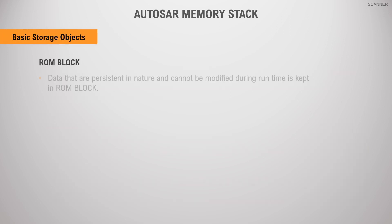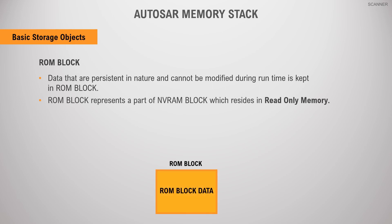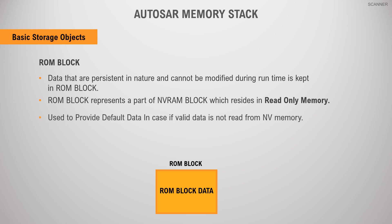Application software data that is persistent in nature and cannot be modified during program execution is kept in a ROM block. A ROM block represents a part of the non-volatile RAM block which resides in read-only memory. It is used to provide default data in cases where no valid data could be read from NV memory, either due to a CRC error or any other failure. For example, if the NV-RAM Manager cannot read a vehicle calibration dataset from non-volatile memory into RAM, it will copy the calibration information from ROM default data to the data area of the corresponding RAM block. CRC blocks are not used with ROM blocks, and the ROM block is an optional part of the NVRAM block.